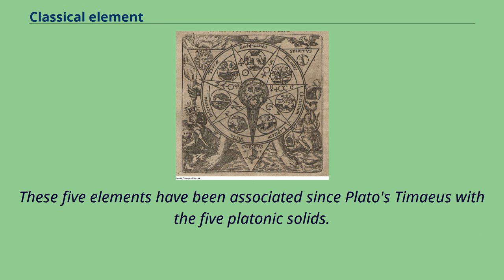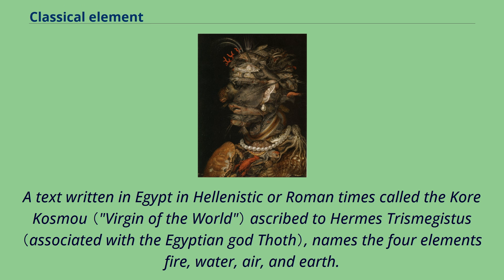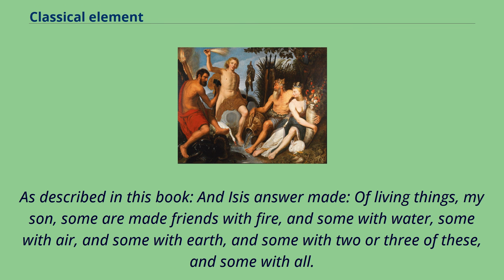A text written in Egypt in Hellenistic or Roman times called the Kore Kosmou, ascribed to Hermes Trismegistus, names the four elements fire, water, air, and earth. As described in this book, Anais's answer: made of living things, my son, some are made friends with fire, and some with water, some with air, and some with earth, and some with two or three of these, and some with all.